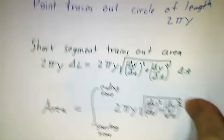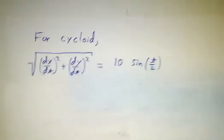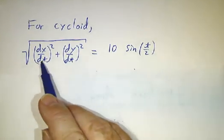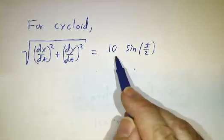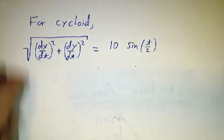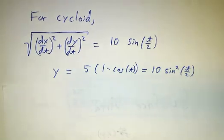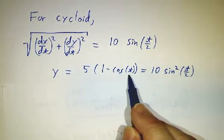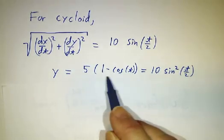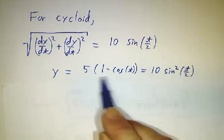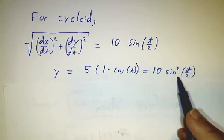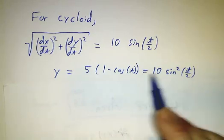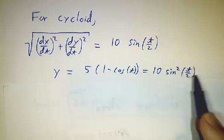So if we do that for our cycloid, we already had that the square root of (dx/dt)² + (dy/dt)² was 10sin(t/2). And y is 5(1-cos(t)). We've already seen that using the double angle formula, 1-cos(t) is 2sin²(t/2). So we get 5×2 = 10sin²(t/2).